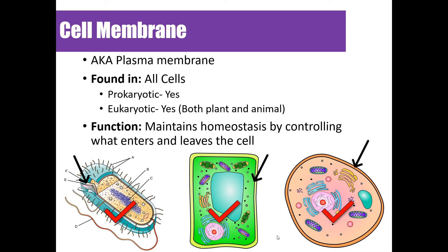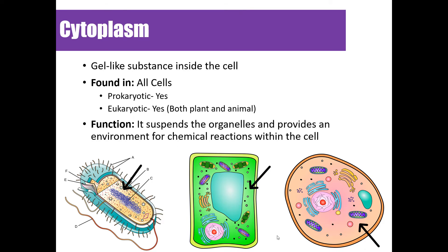The cytoplasm is a gel-like substance made mainly of water that's found inside all cells — both prokaryotic and eukaryotic, and both plant and animal cells. The cytoplasm also provides an environment for chemical reactions that happen within the cell, and we'll learn more about those as we progress through the course.